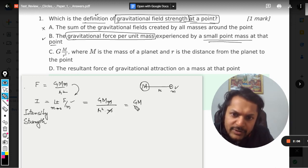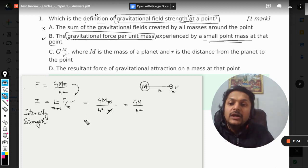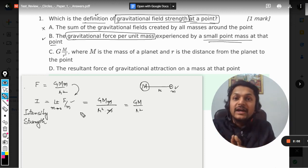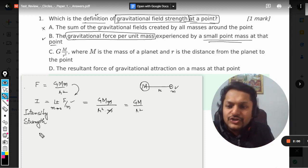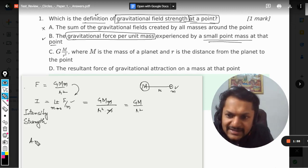This. So it will come out to be GM by r square. Now you can see that this formula is used for something else also, and what is that? That is acceleration due to gravity.